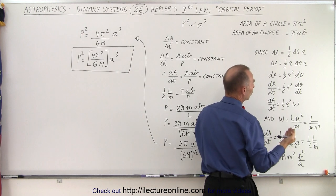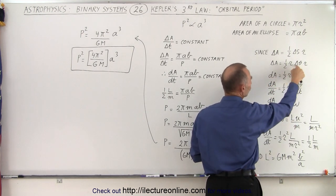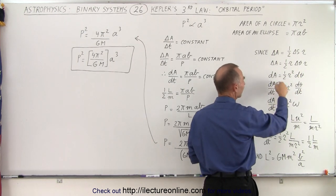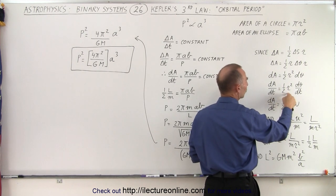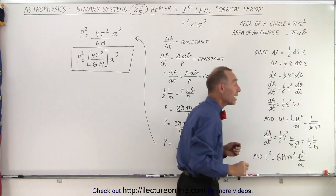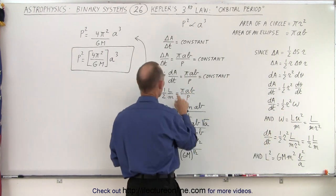Then if we turn that into a differential, we can see that dA equals one half r squared times d theta, and then if we divide both sides by dt, we see that dA/dt is equal to one half r squared d theta/dt. And of course d theta/dt can be written as omega.